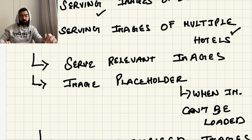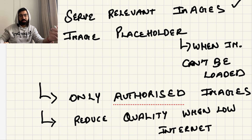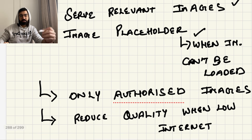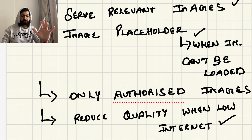Third is serving relevant images, because some images uploaded by a hotel may be filtered out and not shown. Fourth is image placeholder — when an image cannot be loaded, for example if someone's connection is slow, we need something to display instead. Fifth is reduced quality — if someone's internet is slow, they will see low quality images, but still see images.